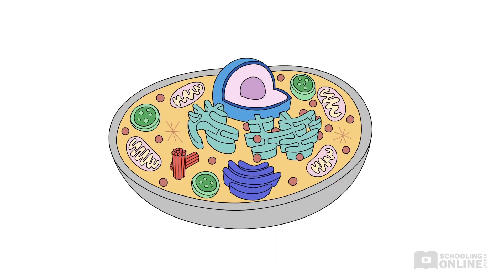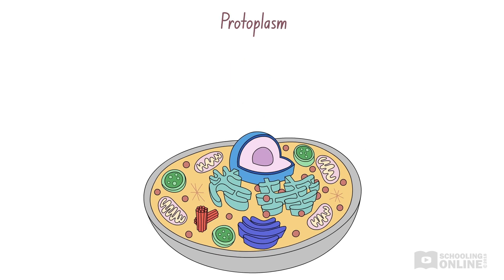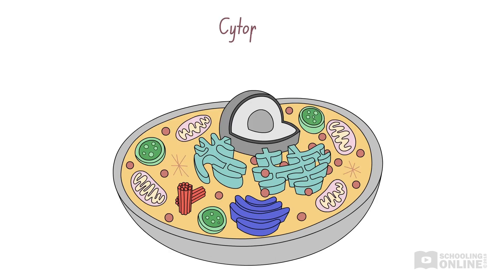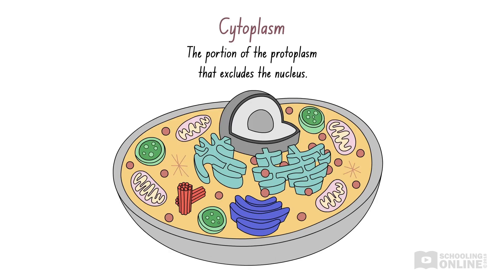Now, let's exit the nucleus and quickly return to the interior of animal cells. The protoplasm, which consists of everything inside the cell, can be divided into two major sections: the nucleus and the cytoplasm. Remember, the cytoplasm in a eukaryotic animal cell is different to the cytoplasm in a prokaryotic cell. The cytoplasm is the portion of the protoplasm that excludes the nucleus.